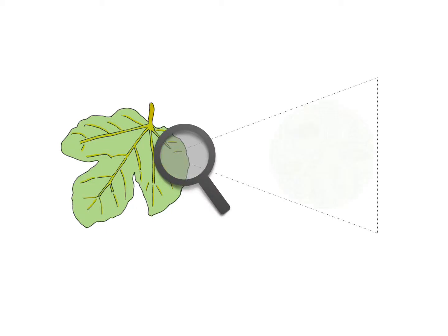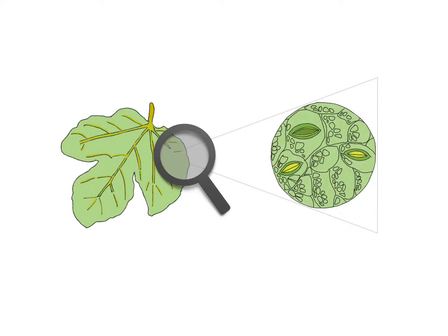Leaves on the plants have minute epidermal pores, and these pores are called stomata. These stomata are responsible for the exchange of gases. Carbon dioxide in the atmosphere, which is responsible for photosynthesis, enters the plant leaf through these stomata.